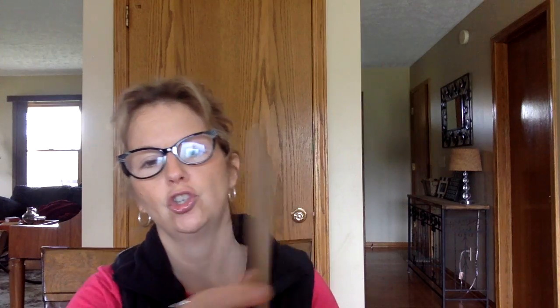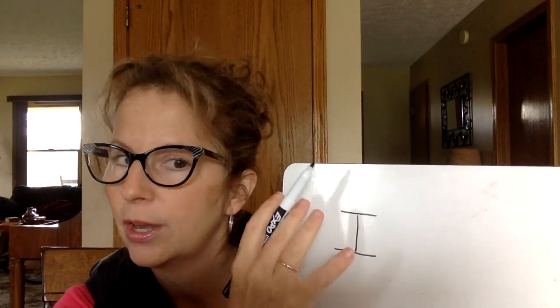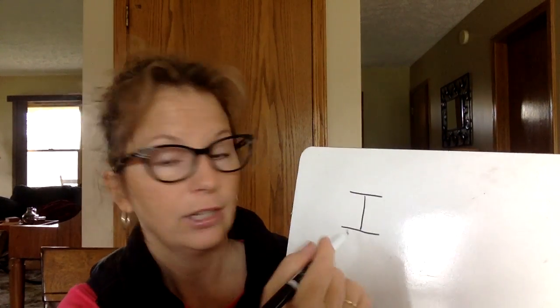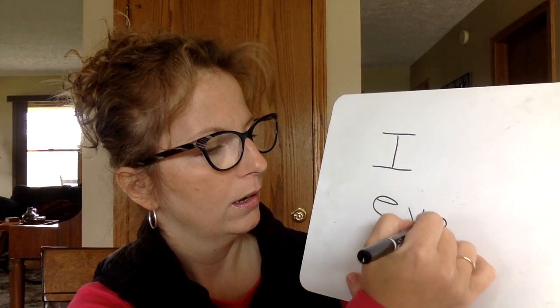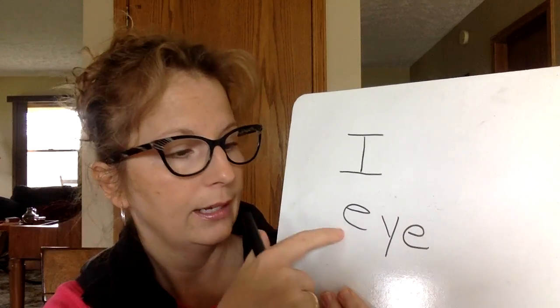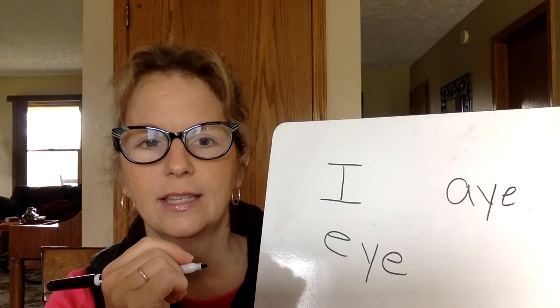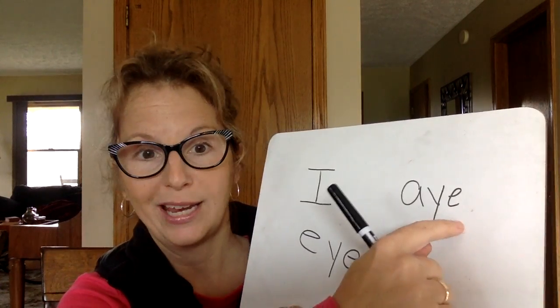Now I want you to write the word 'I' — the one that means me, as in 'I am going to Disney World.' When we write this word I, it's always going to be uppercase no matter where it comes in a sentence — it's just the letter I. Just so you know, there are a couple of other ways to spell 'I': E-Y-E means your eyeball, and A-Y-E is the pirate word, like 'aye aye, matey.'